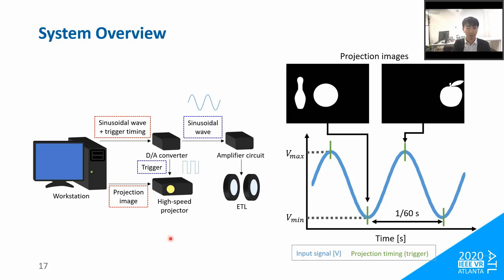This is the system diagram. The digital-to-analog converter outputs a sinusoidal signal to the ETLs and a trigger signal to the projector to synchronize illumination. We control the system to project different projection images at different voltages. The ETL's driving frequency is 60 Hz, and the projection timing is determined taking into account the response speed of the ETL.